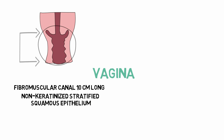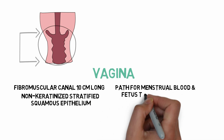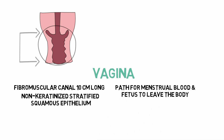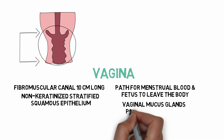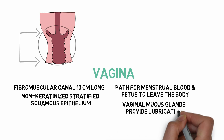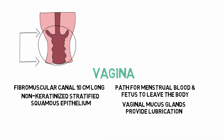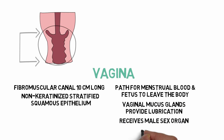The vagina provides a path for menstrual blood and the fetus to leave the body. The vaginal mucus glands provide lubrication. It also receives the male sex organ and the sperms.